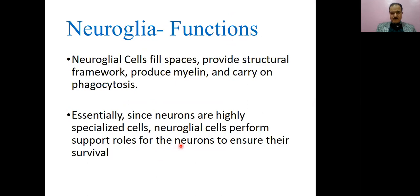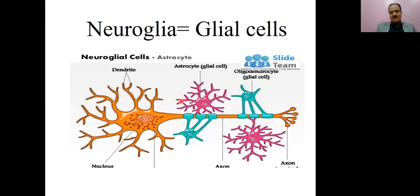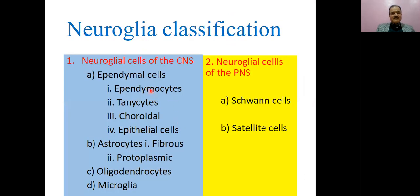These are the various types of neuroglial cells, or simply glial cells. We can divide them into neuroglial cells of the central nervous system and neuroglial cells of the peripheral nervous system. In the CNS we have: ependymal cells (four subtypes — ependymocytes, tanycytes, choroidal cells, and epithelial cells), astrocytes (two types: fibrous and protoplasmic), oligodendrocytes, and microglia. In the peripheral nervous system we have mainly two types: Schwann cells and satellite cells.